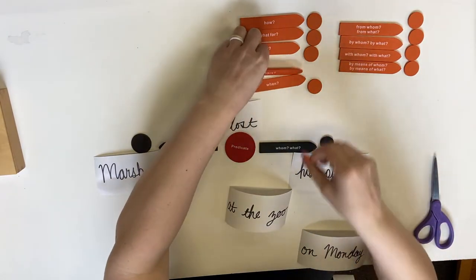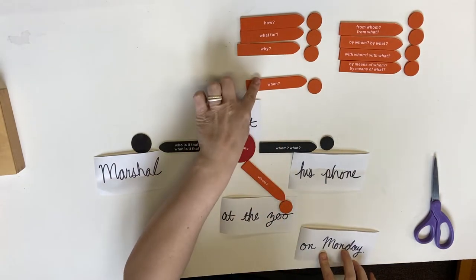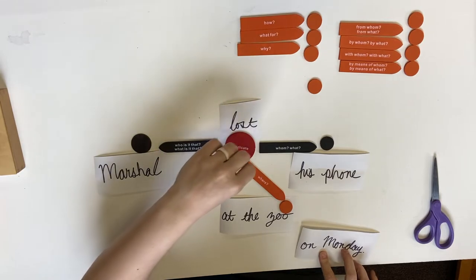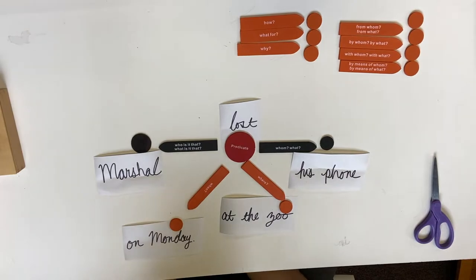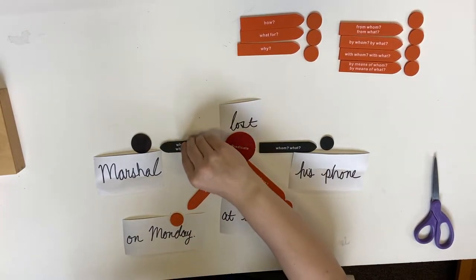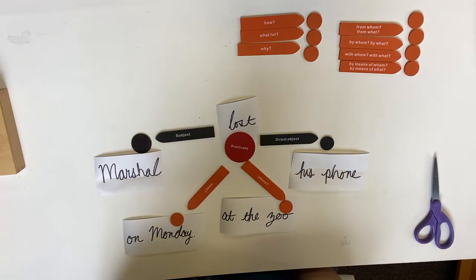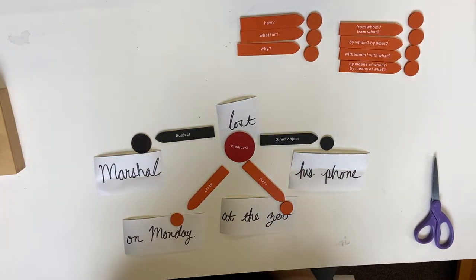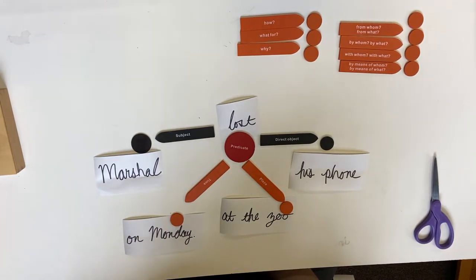I'm going to take 'where' — at the zoo. All right, we have 'on Monday.' When? On Monday. So we have our predicate, our subject, our direct object. We have two — remember that crazy word? — adverbial extensions. We have an adverbial extension of place and an adverbial extension of time. Time is when, place is where.